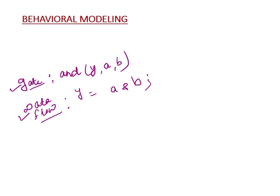In gate level modeling, we use the primitives already defined inside the Verilog library. We instantiate these primitives to design our logic, utilizing predefined logic gates included in the Verilog library. Using a primitive is nothing but directly utilizing a piece of hardware — for example, writing 'and Y A B' directly instantiates a hardware AND gate.